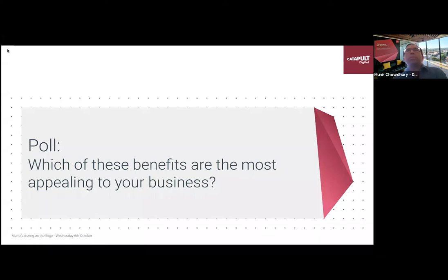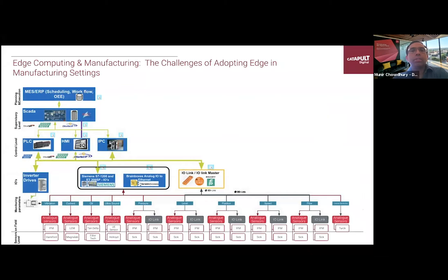The poll results are coming through. Industrial automation and digital twins seem to be quite high in interest levels — the others are pretty even — but around a third of people indicated that industrial automation and digital twins are the most appealing. So let's move on to some of the challenges.